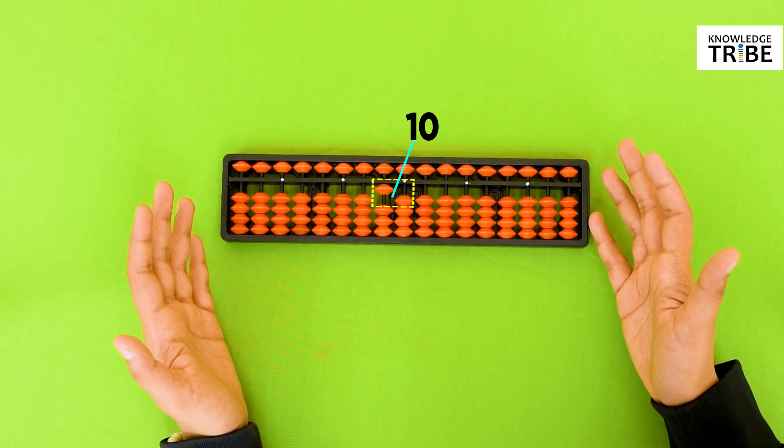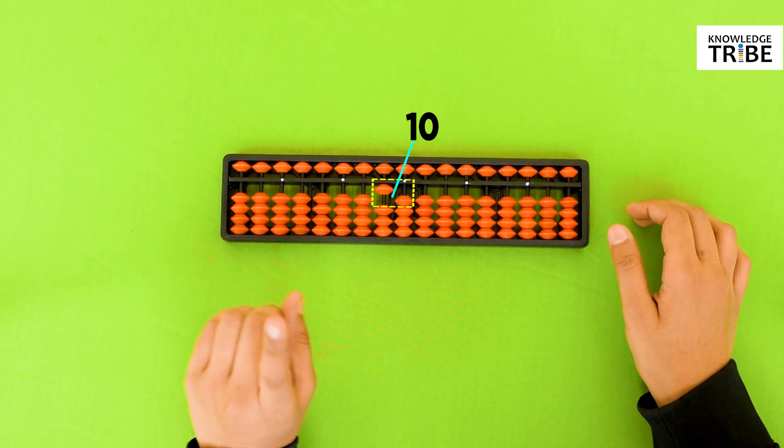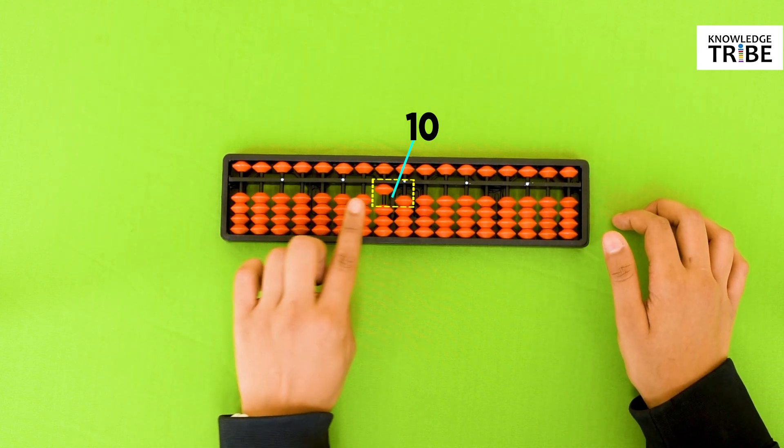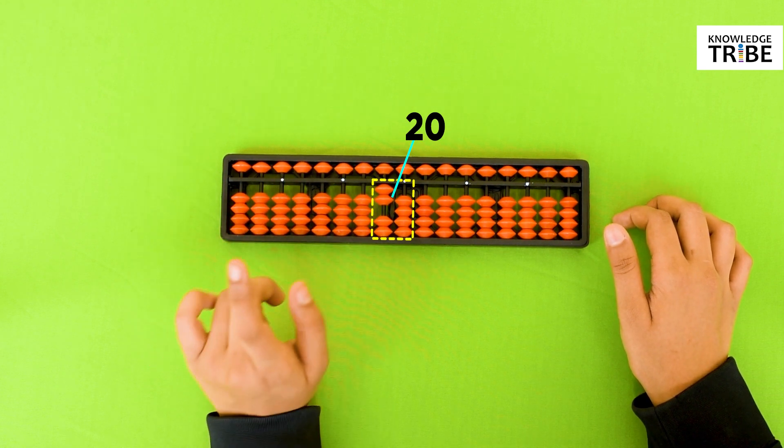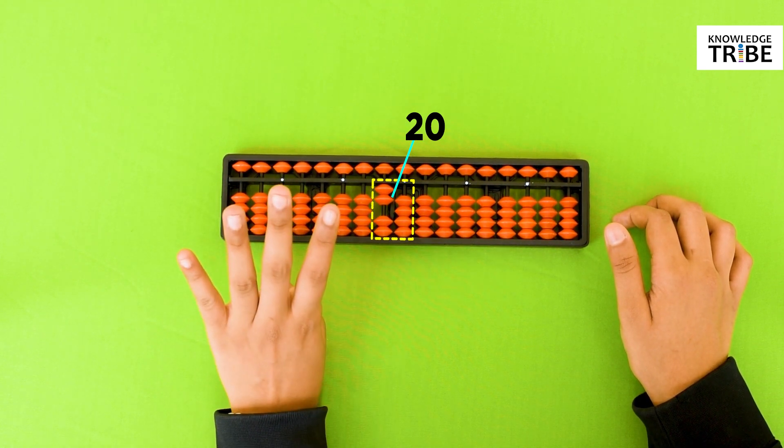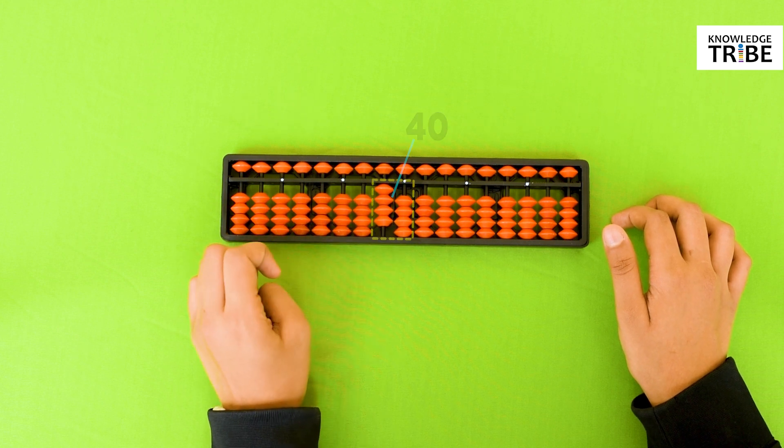Now tell me how to write 20. Simple, move 1 earthly bead from the second column towards the center of the beam. This can go up till 40. 30, 40.